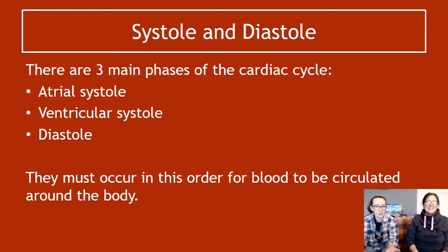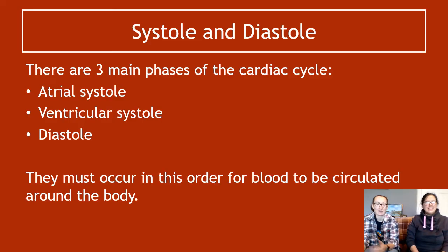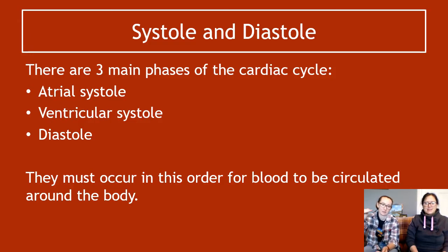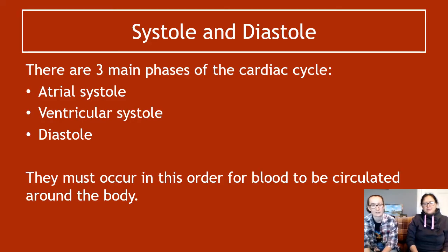So the words we're going to pronounce differently: systole and diastole. There are three main phases of the cardiac cycle: atrial systole, ventricular systole, and diastole. All three of them must occur once for that to be one cardiac cycle. So it goes atrial systole, ventricular systole, diastole — that is one heartbeat, the blood going from one end of the heart out through the other. That is one cardiac cycle.